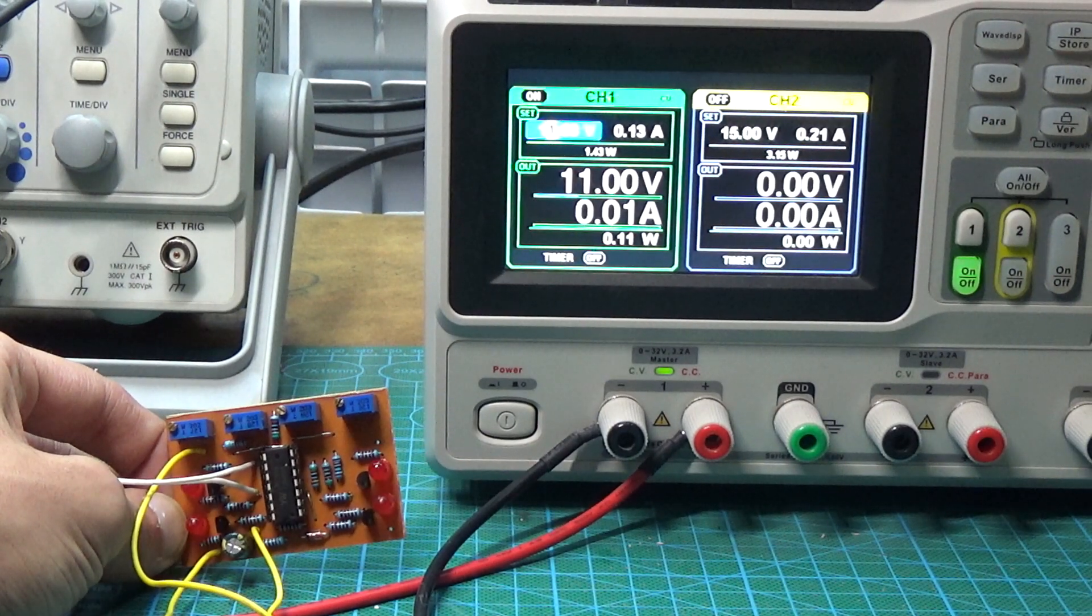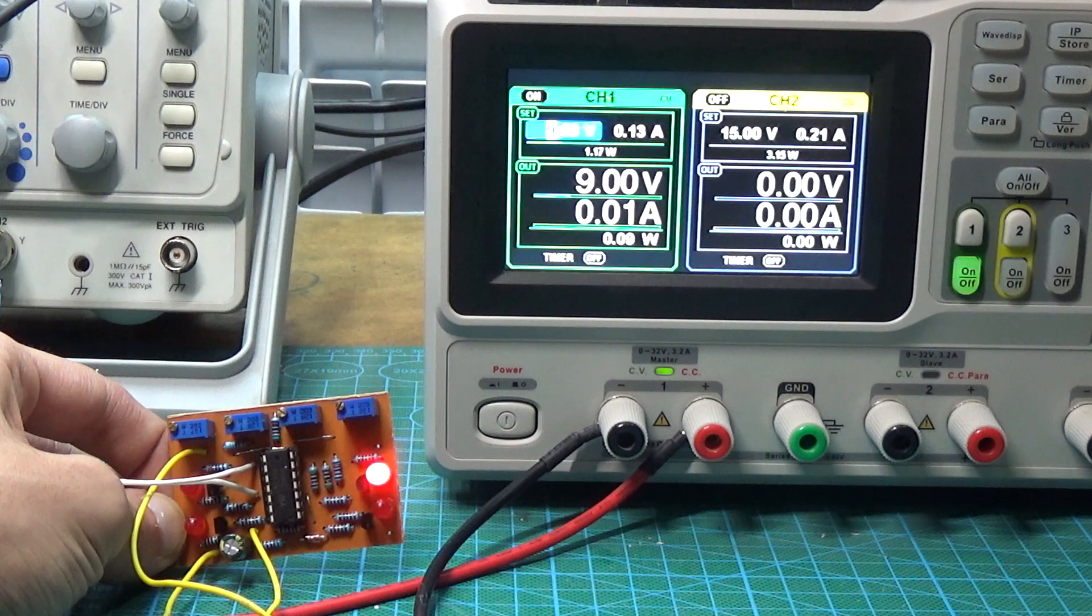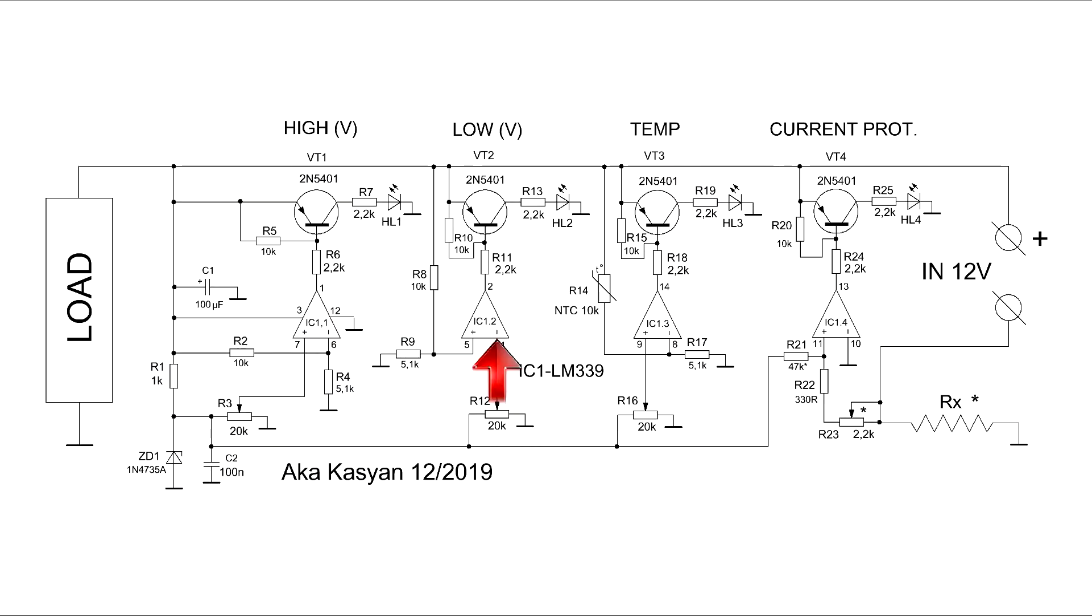In the case of protection against low voltage, the same thing happens. Only the reference voltage is applied to the inverted input of the comparator.